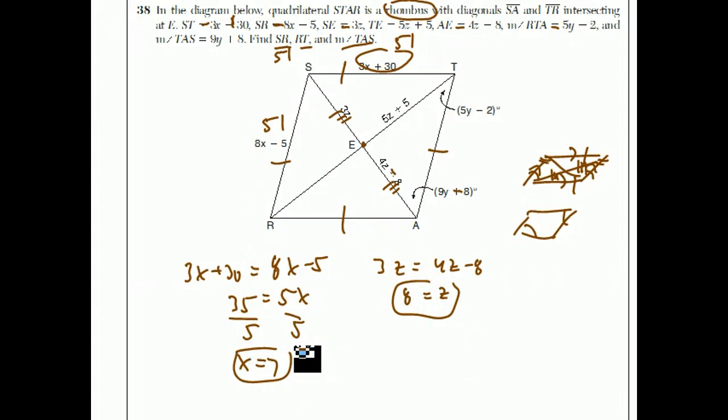They want to know how big RT is. If z equals 8, then ET is 5 times z, which is 5 times 8 plus 5, which is 45. Which means RT, which is double ET, would be 90.